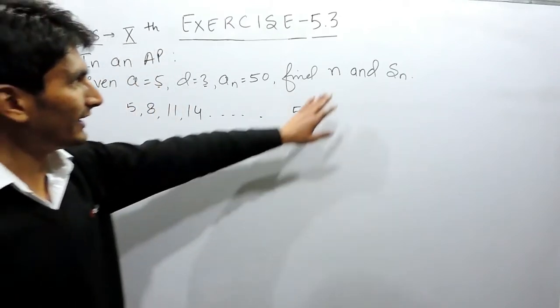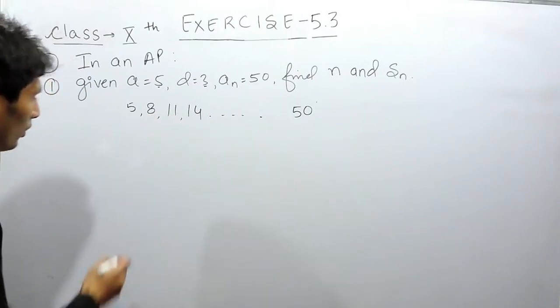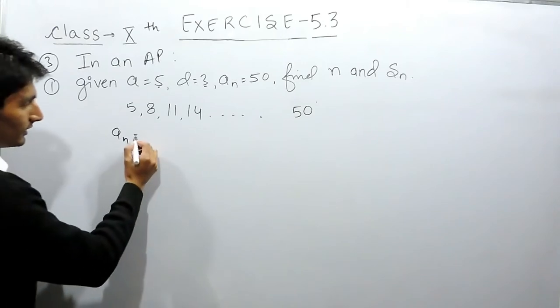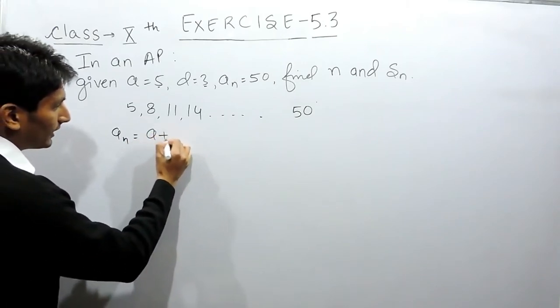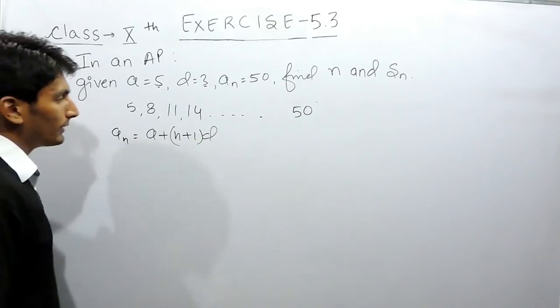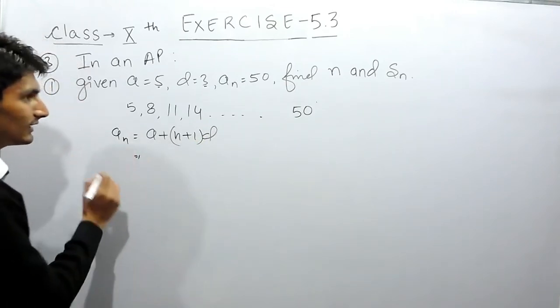First of all you have to find N, means you have to find the number of terms in this AP. Now if you want to find the last term or the Nth term, we have a formula which says that AN is equal to A plus (N-1) into D.